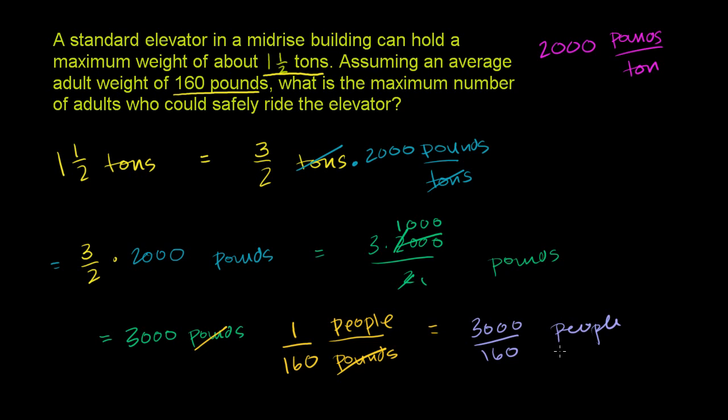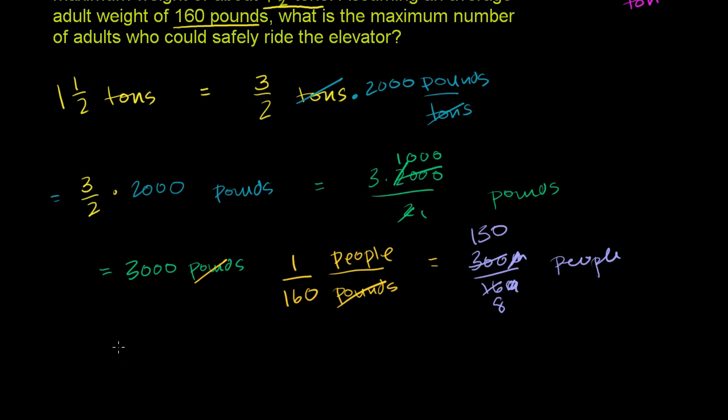That is the maximum capacity of the elevator in terms of average people. We can divide the numerator and denominator by 10, which gives us 300 over 16. Dividing both by 2 gives us 150 over 8. Dividing by 2 again gives us 75 over 4 people.